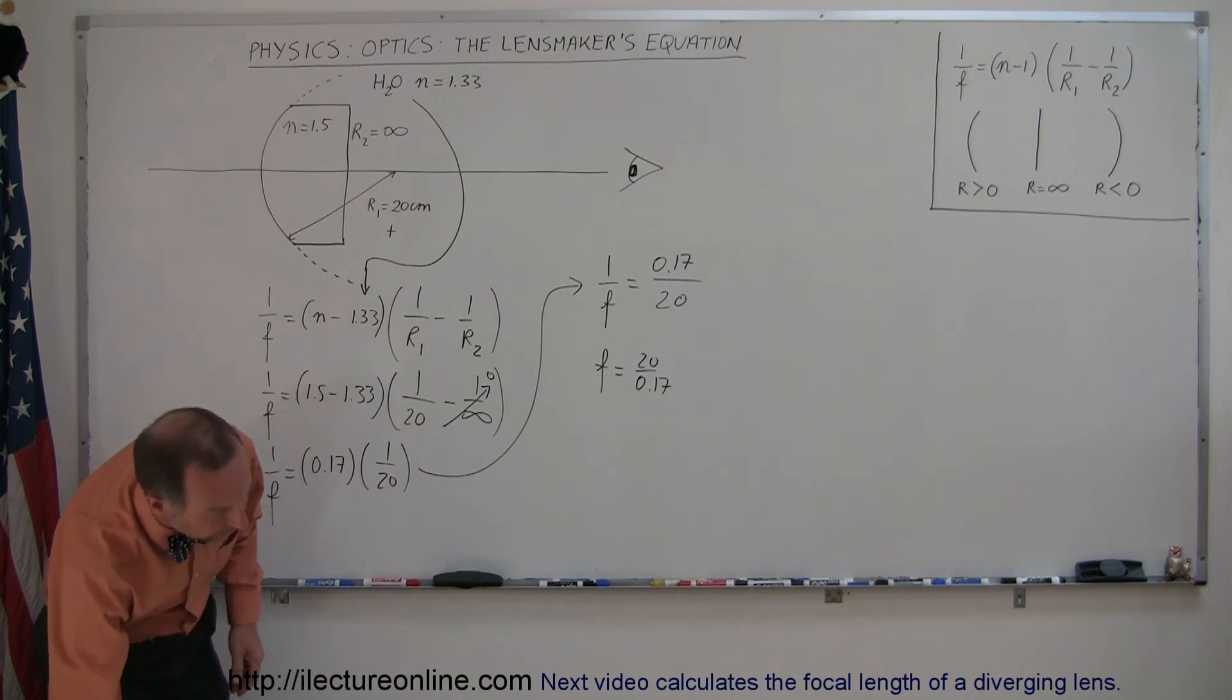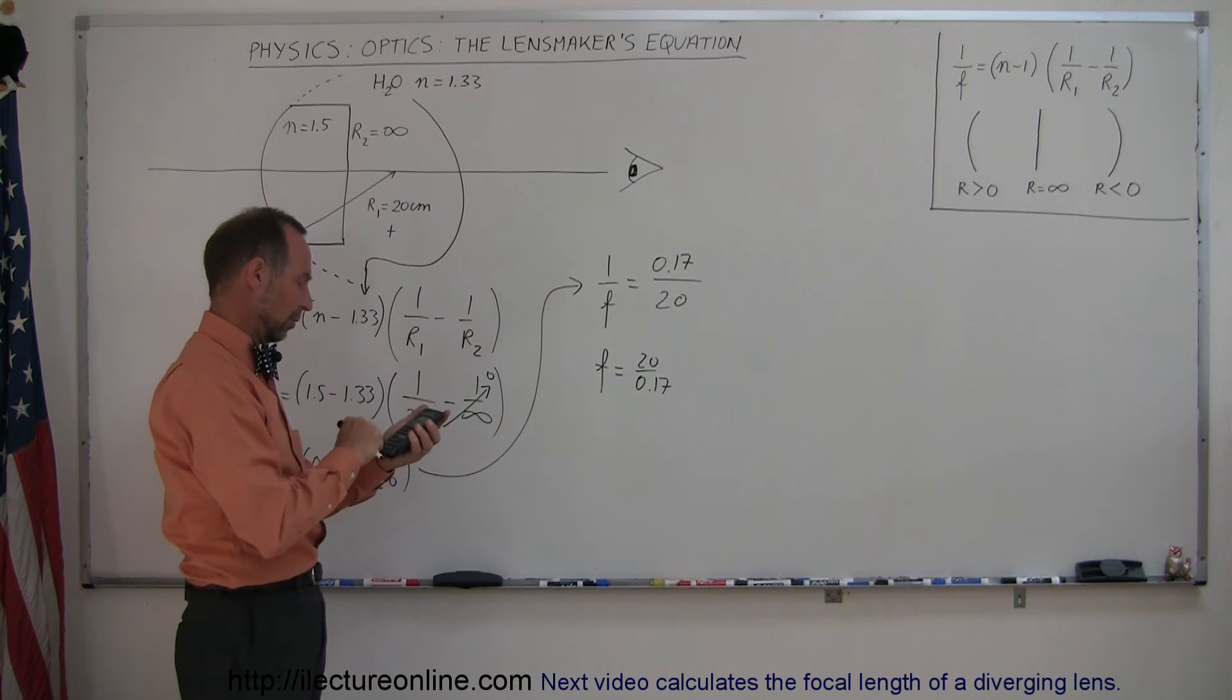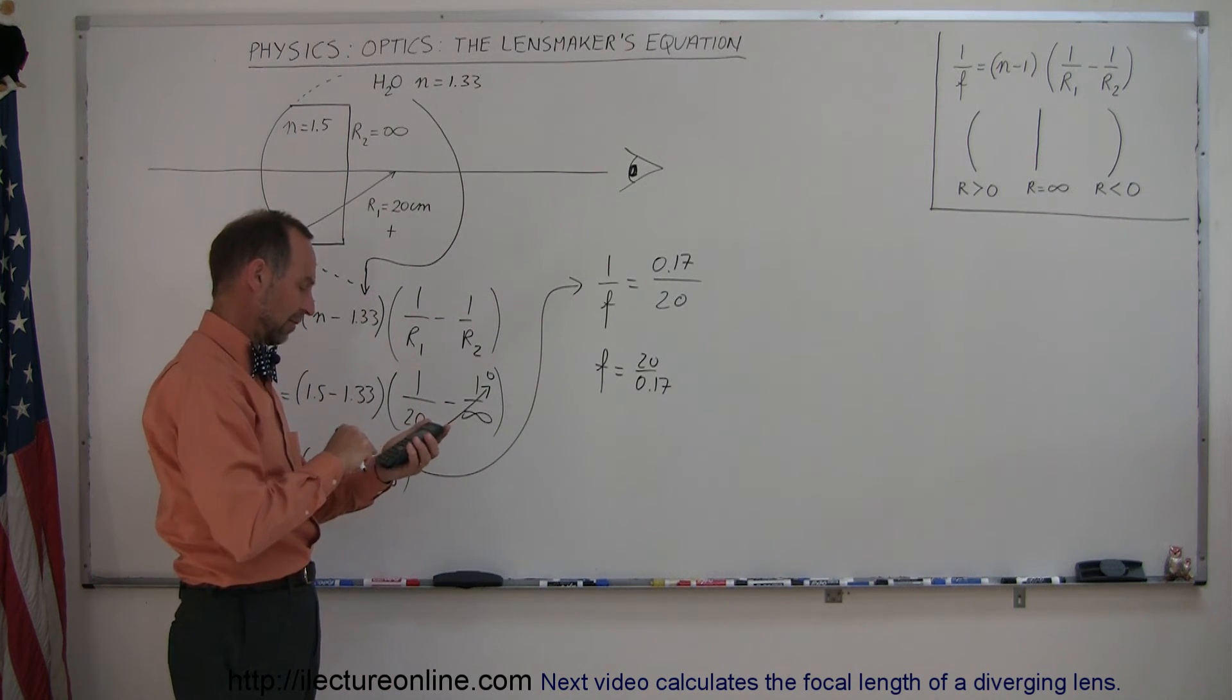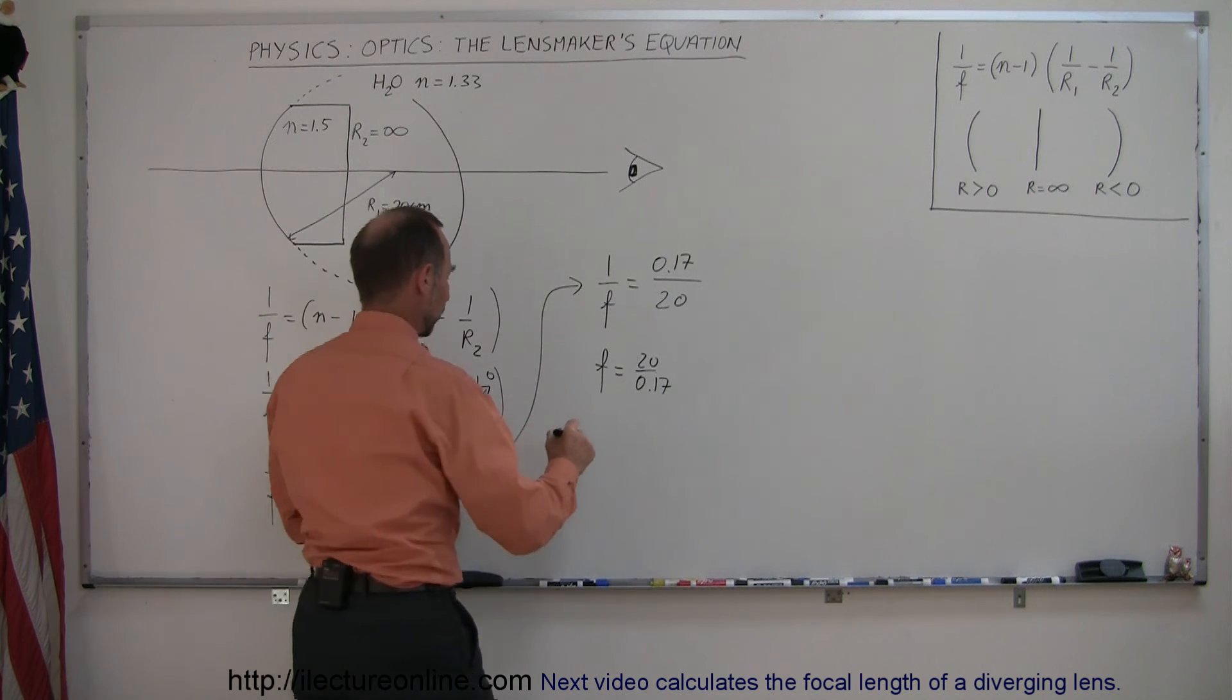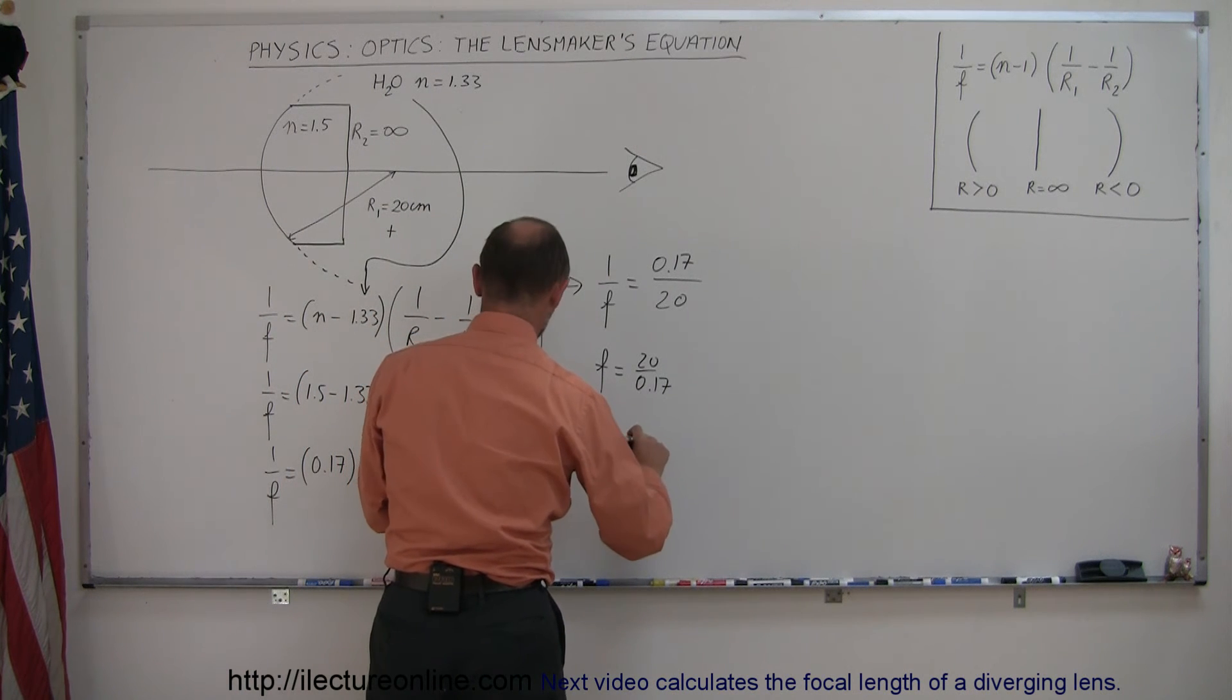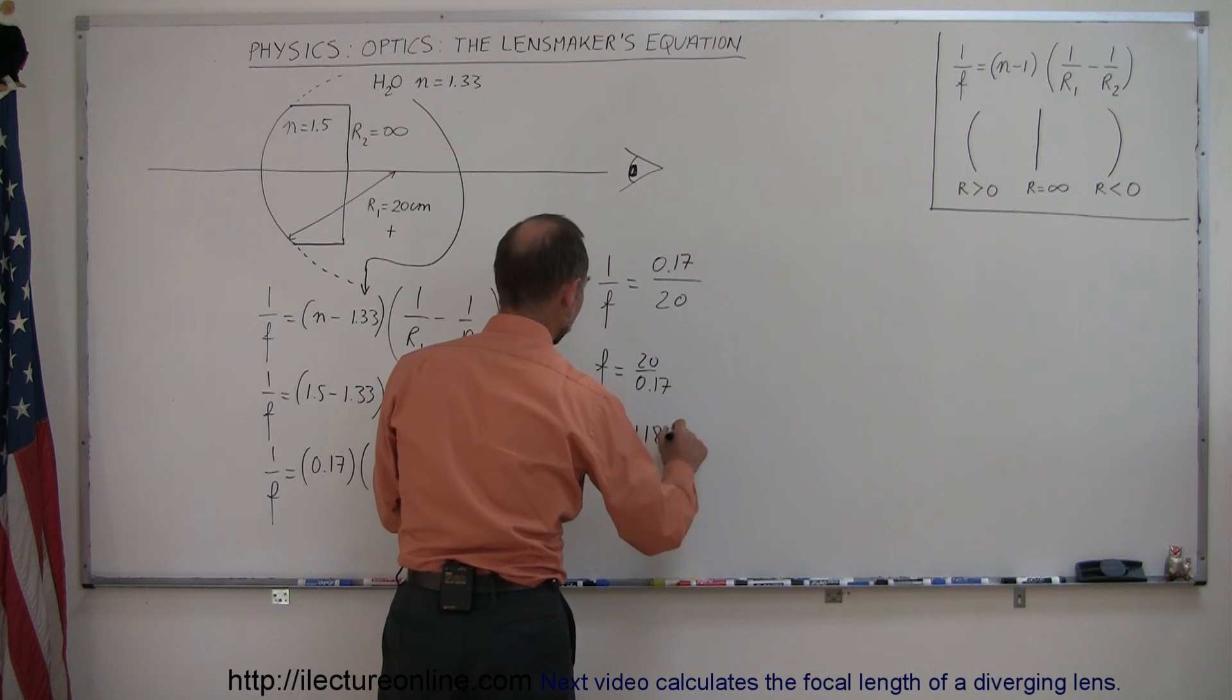For that, I'd rather use a calculator. 20 divided by 0.17 equals... The focal length equals 118 centimeters.